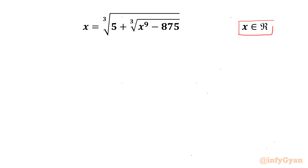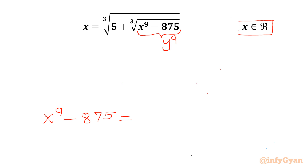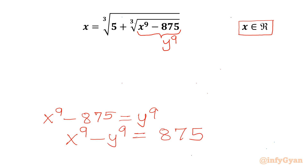Let us get started by considering this radicand equal to y to the power 9. So with this substitution I can write x to the power 9 minus 875 equal to y to the power 9. From here, x to the power 9 minus y to the power 9 equals 875. I will call this equation number 1.